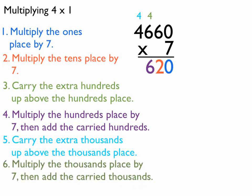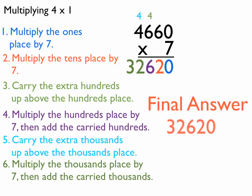Now multiply the thousands place by 7 and add the carried amount. 7 times 4 makes 28, plus 4 equals 32. The final answer is 32,620.